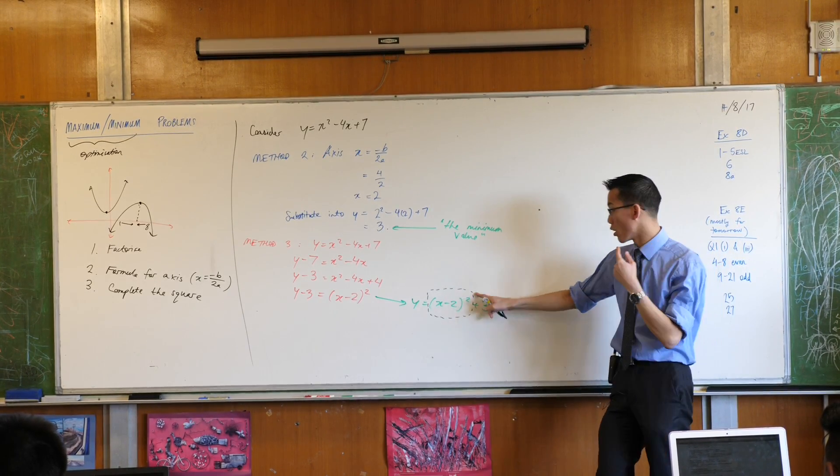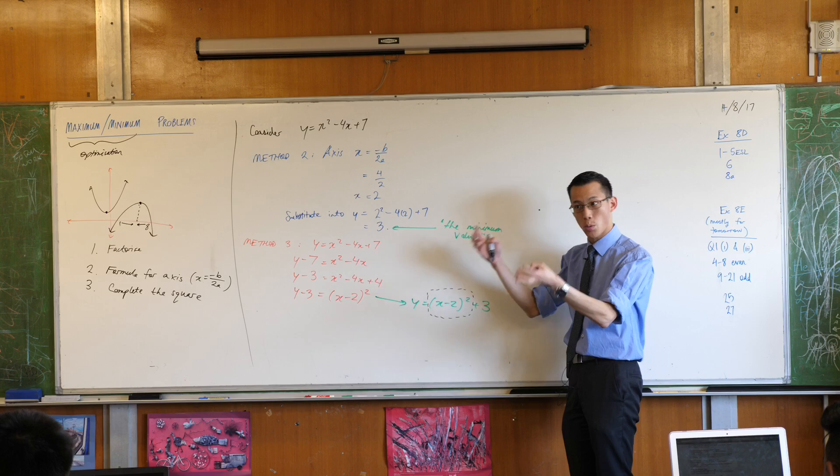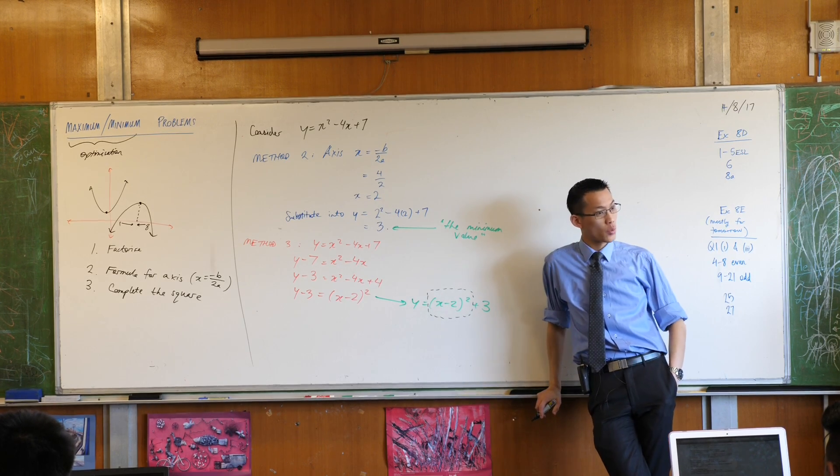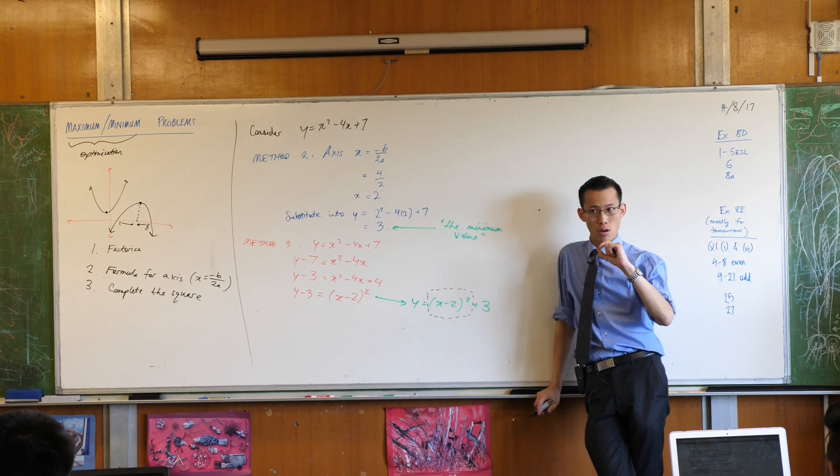The smallest value? The whole thing. Something square. The smallest value that a square can take is 0.